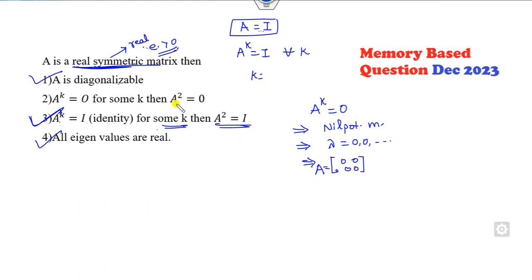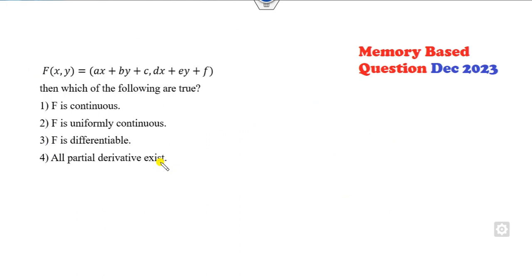Since this is a real symmetric matrix, the only possible value is the zero matrix. So once A is zero, A² is obviously zero. So the right answers are A, B, C, D - all are correct answers.